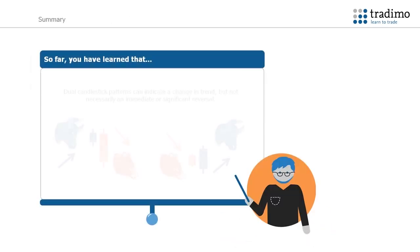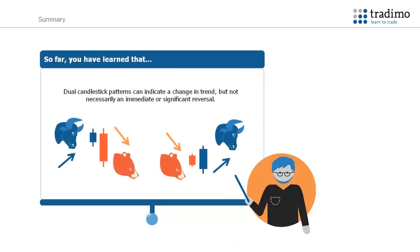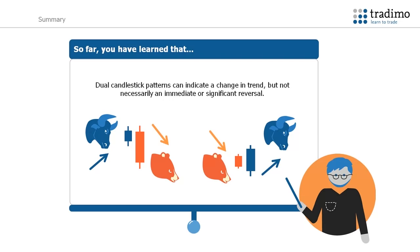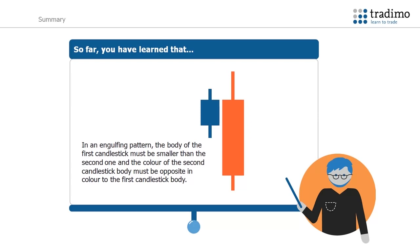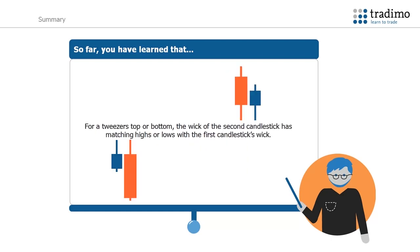So far you have learned that dual candlestick patterns can indicate a change in trend, but not necessarily an immediate or significant reversal. In an engulfing pattern, the body of the first candlestick must be smaller than the second one, and the colour of the second candlestick body must be opposite in colour to the first. And finally, for a tweezer top or bottom, the wick of the second candlestick has matching highs or lows with the first candlestick's wick.